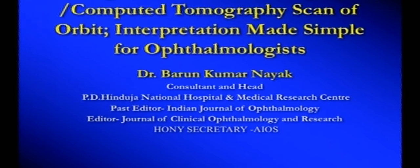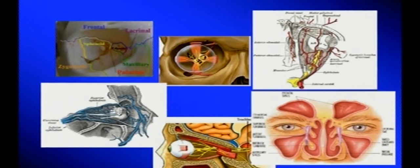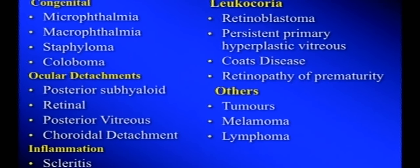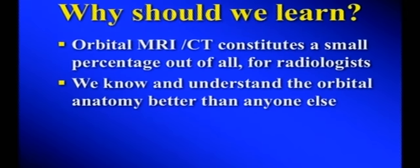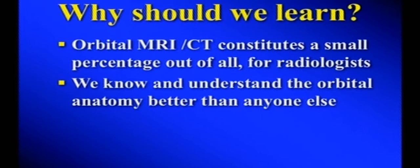Whenever a patient comes with MRI or CT scan imaging of the orbit, reading those films becomes a difficult proposition. I'm sure everyone has faced this situation. A patient comes with an MRI or CT of the orbit, he doesn't know I don't understand it, so he wants to show the film. Then we put it on the view box, sometimes upside down, try to see against some light, do some drama, and finally take out the report and read just the last sentence.